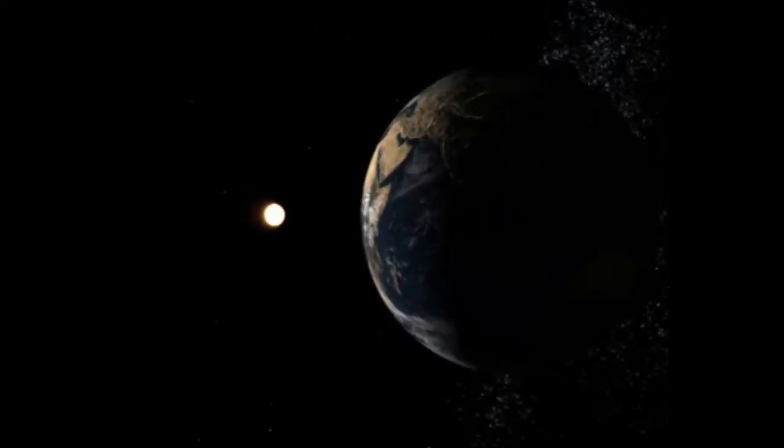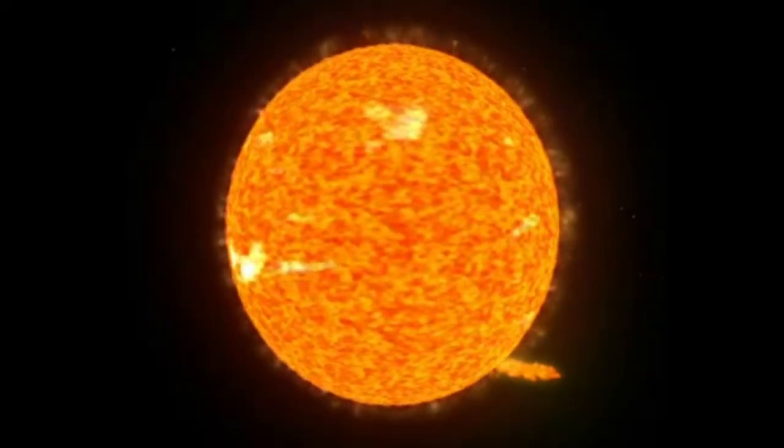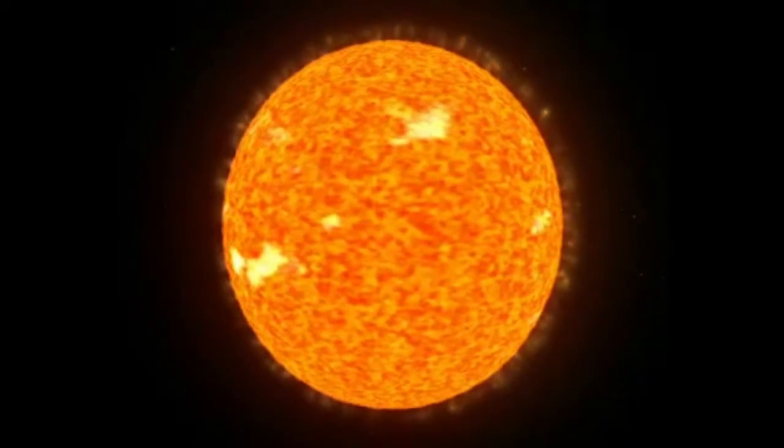Naked eye, the Sun appears as a bright ball, but through telescopes and satellites, we find out that the surface is constantly distressed by the effects of the high temperature, around 5,500 degrees, and the strong magnetic fields.